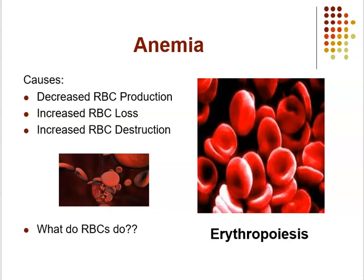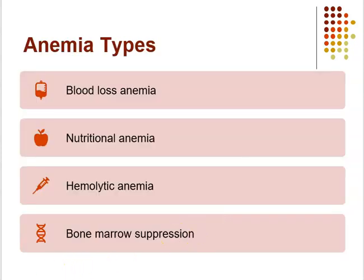RBCs transport oxygen to body tissues and help return carbon dioxide to the lungs for excretion. Oxygen binds to hemoglobin, and alterations in number, size, shape, or composition of RBCs affects their ability to carry out these functions. Erythropoiesis impacts RBC production, and the risk for anemia increases with age. Every type of anemia reduces the oxygen-carrying capacity of the blood due to deficiency of RBCs or hemoglobin, which can lead to tissue hypoxia.